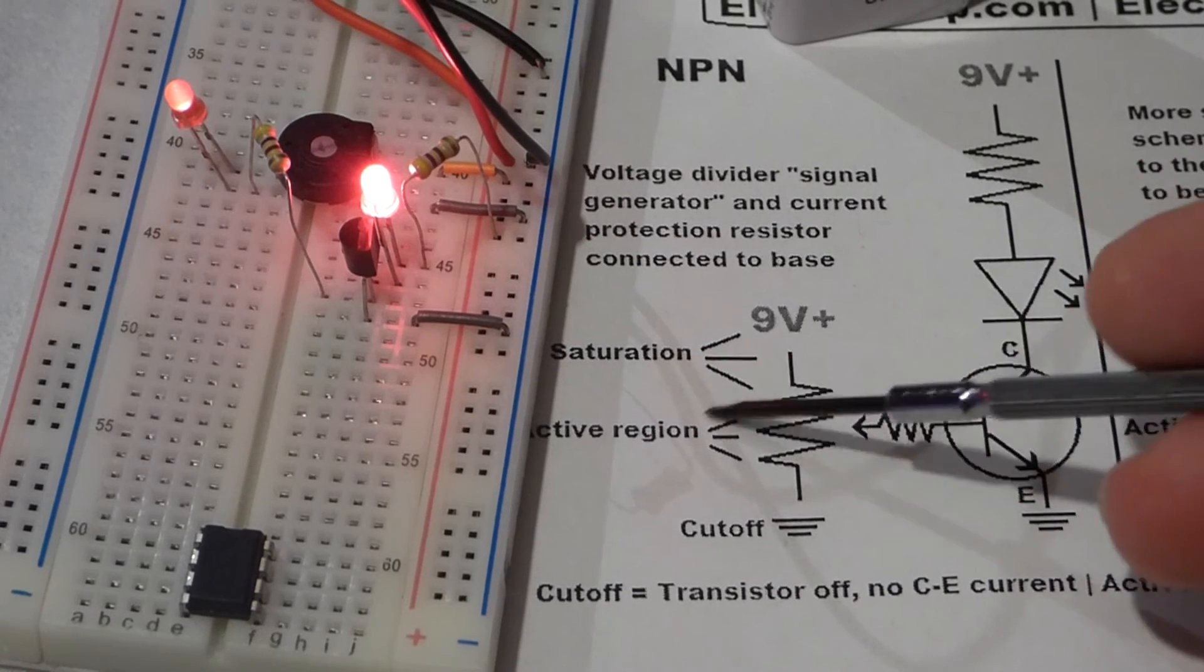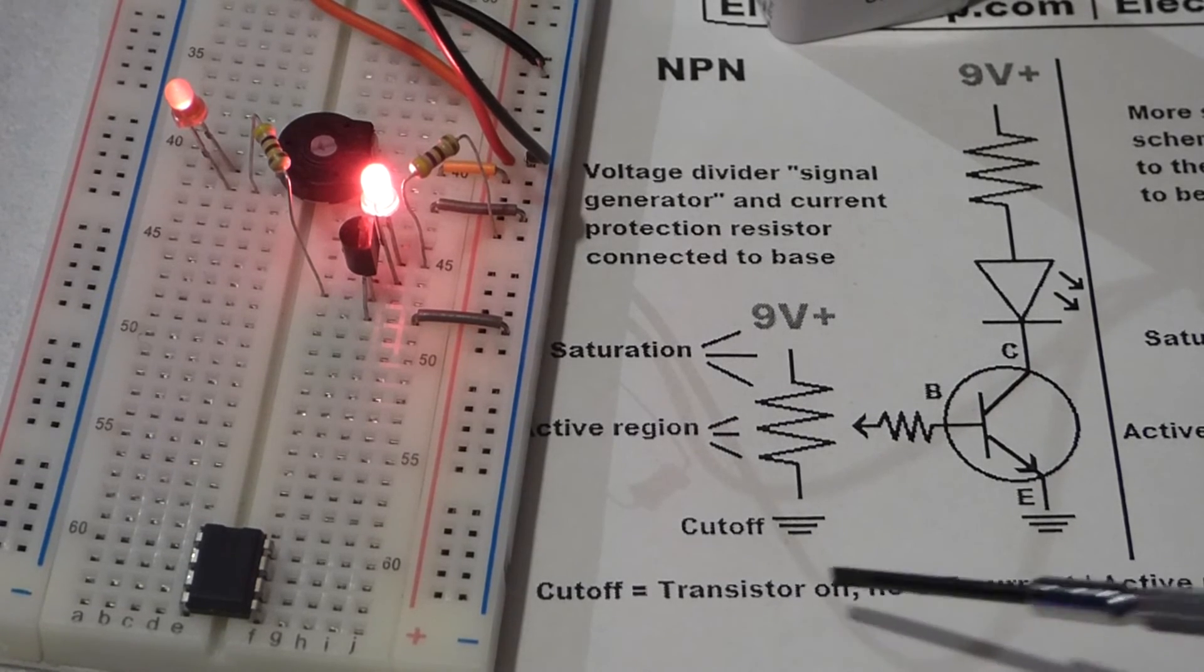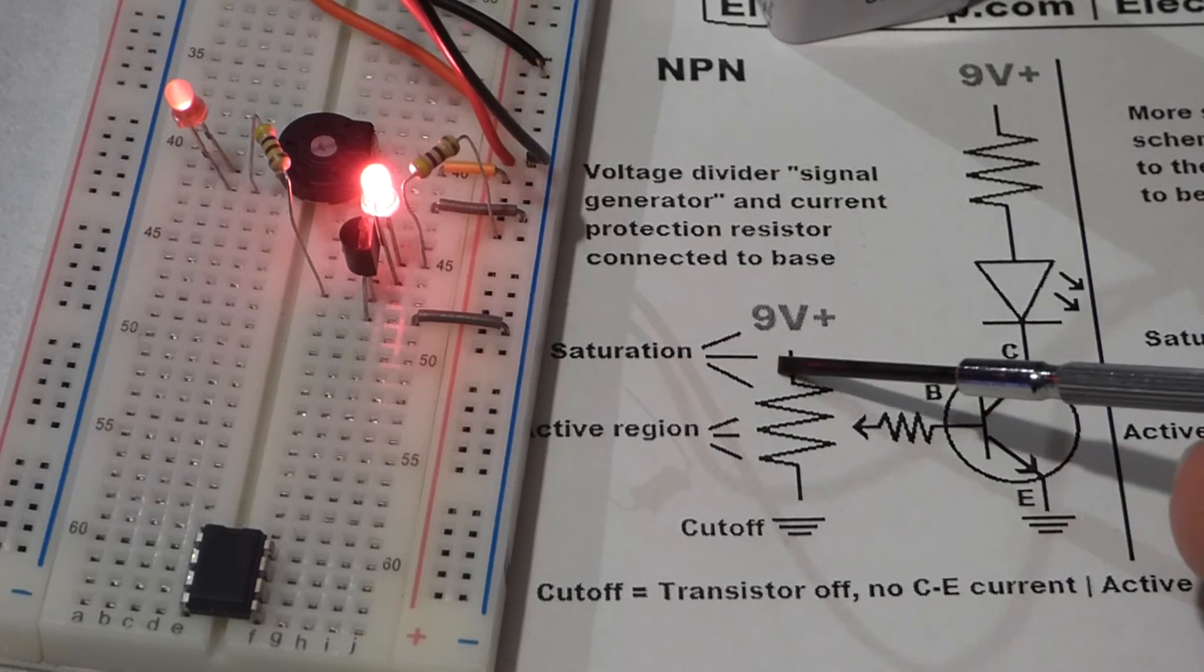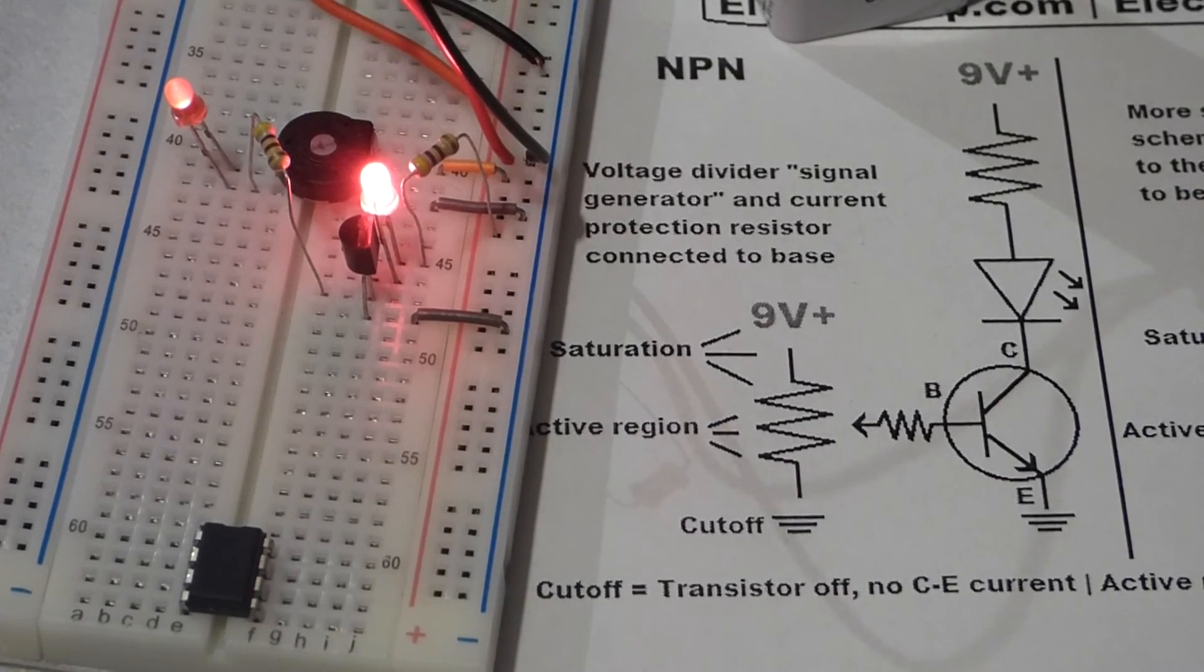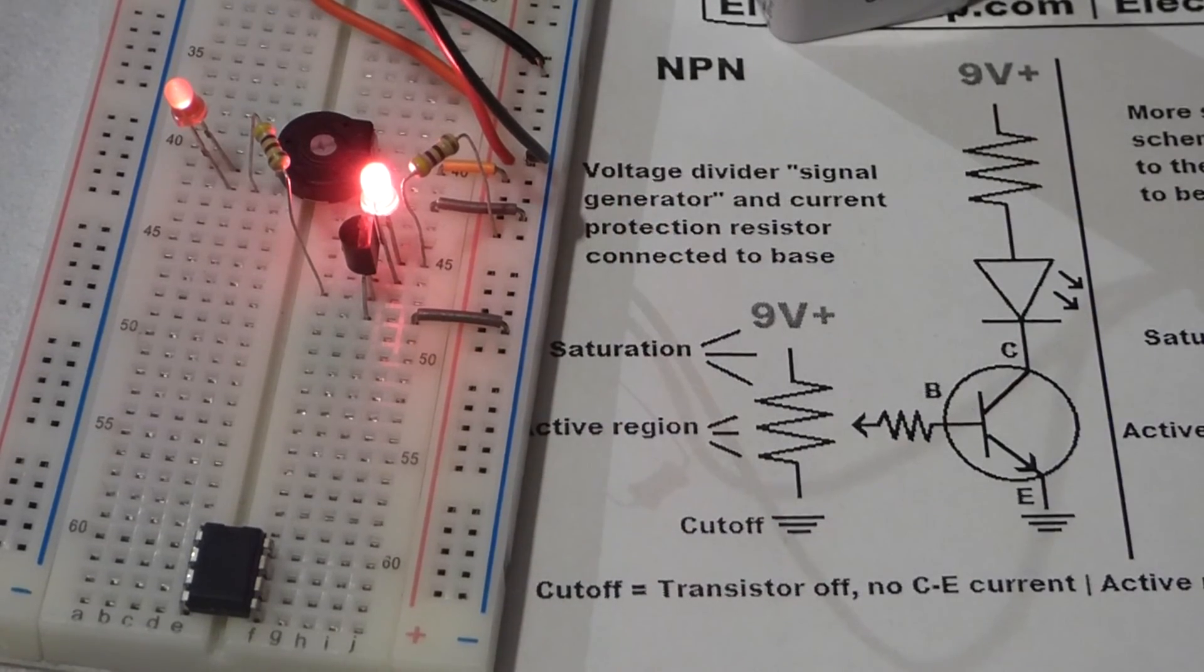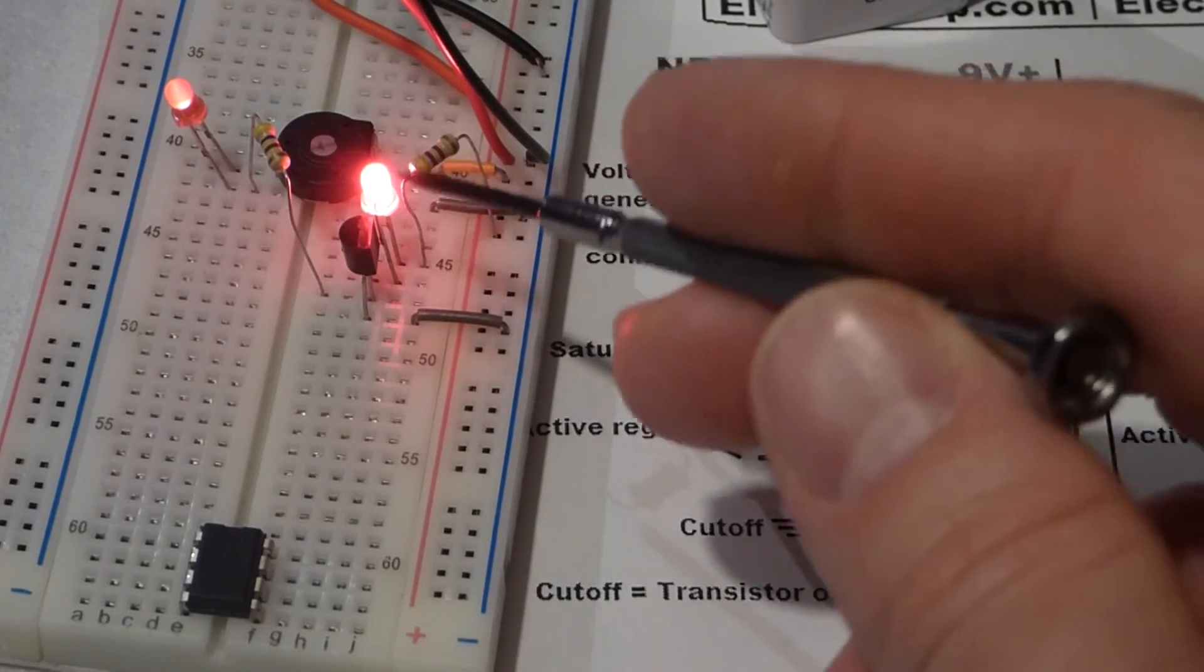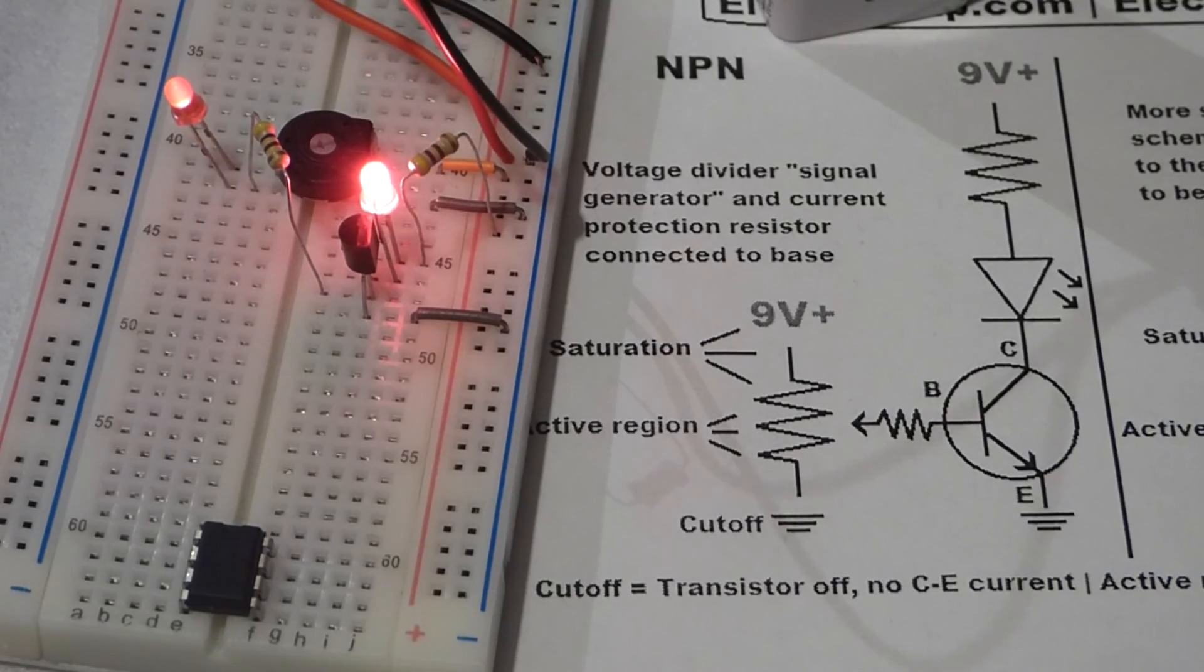That's called the saturation point. When it comes to transistor amplifiers, the main things you need to know are the cutoff point, the active region, the saturation point, and then the gain. You want to know for however much current you give to the base, what the multiple amount of current flowing from collector to emitter is, and also the load that you have connected—you want to know what the gain is.